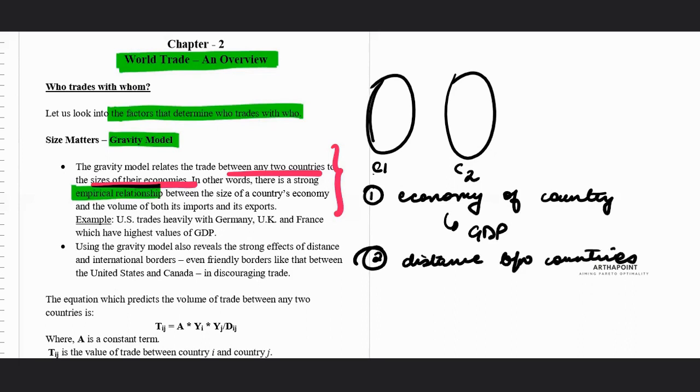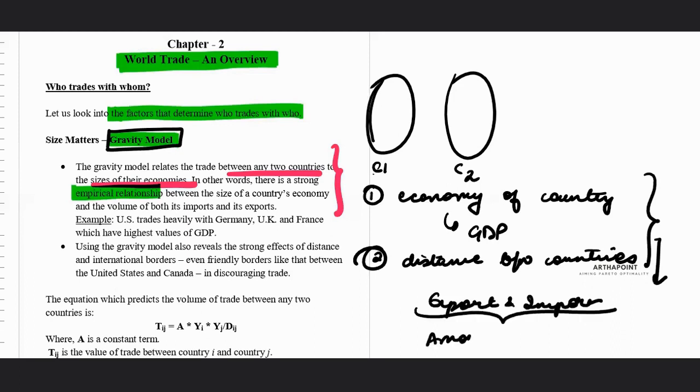So the gravity model actually suggests that the amount of export and import, which is basically the amount of trade, this amount of trade actually depends on the distance between the two countries and it depends on the economy of the two countries.